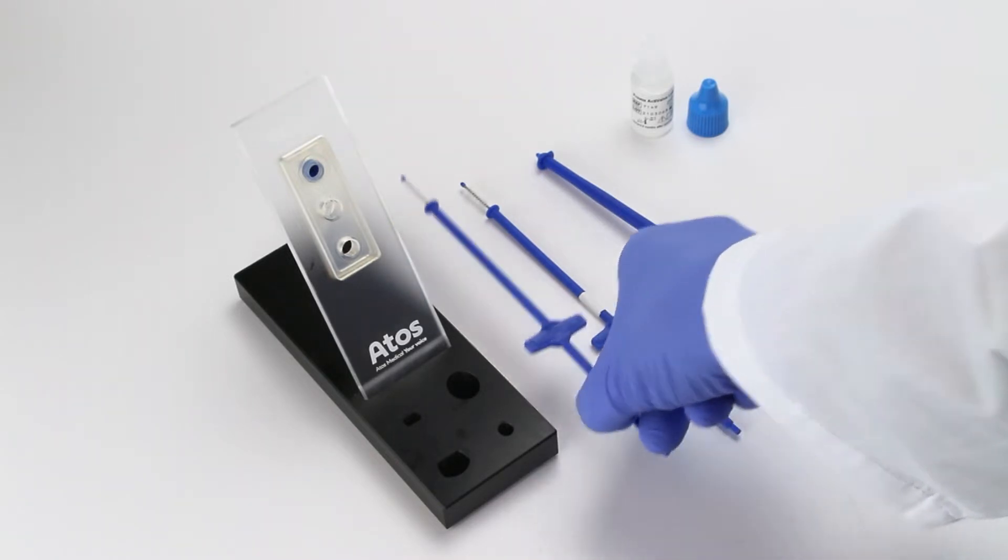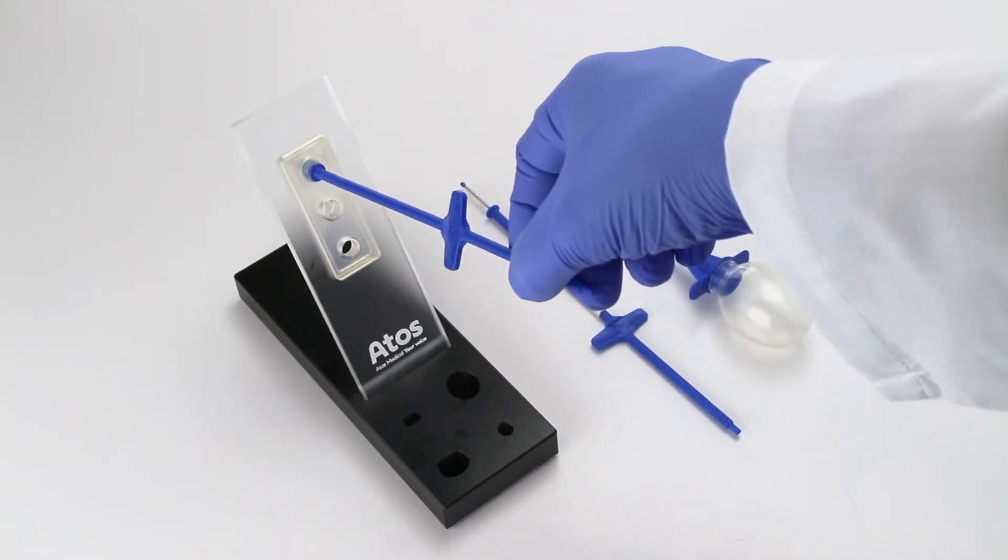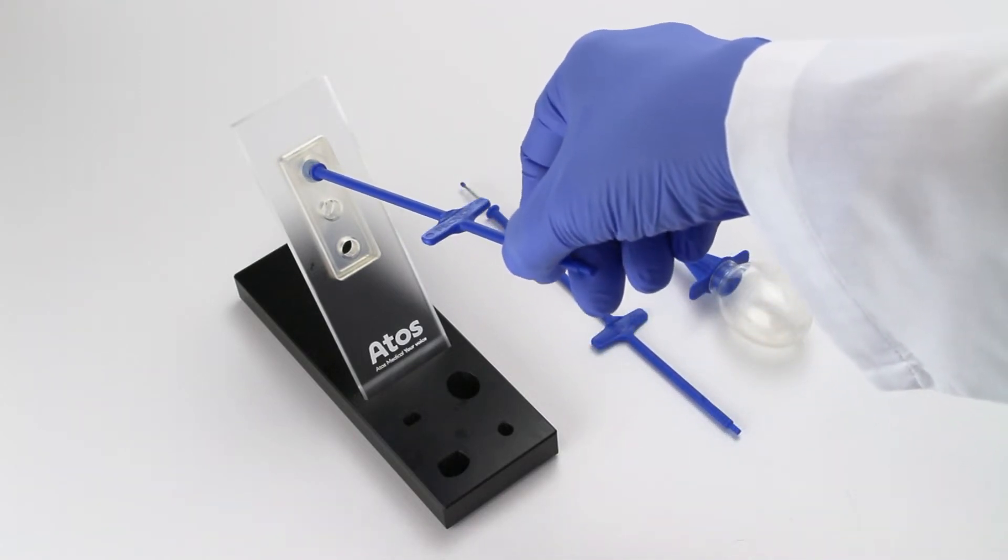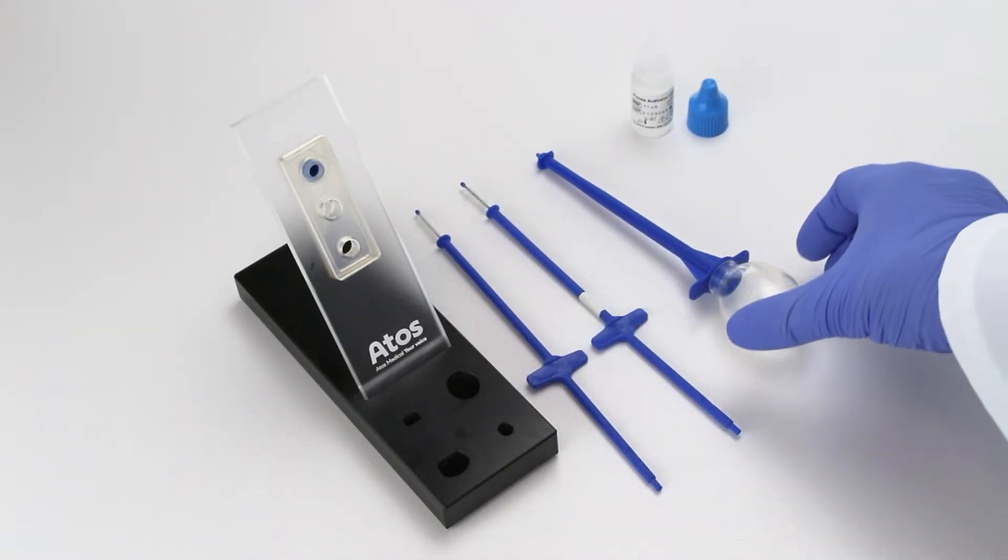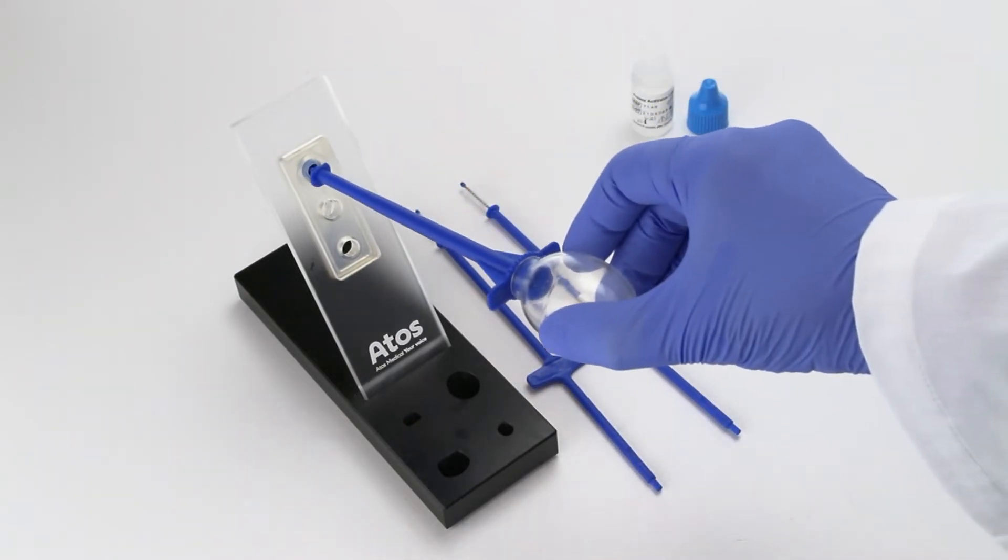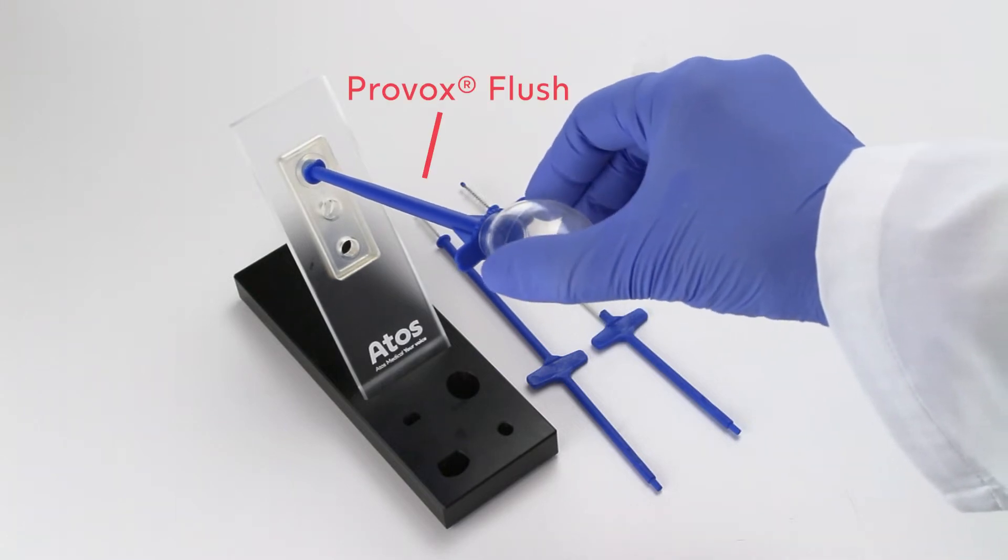Use the Provox brush dedicated for cleaning to brush the prosthesis two times a day and after each meal to remove mucus and food remnants from the prosthesis. After brushing, flush the prosthesis with the Provox flush.